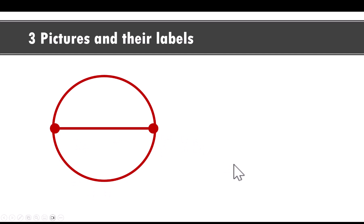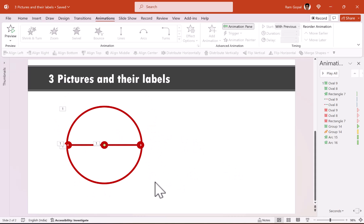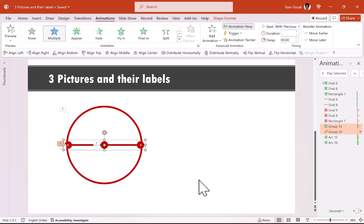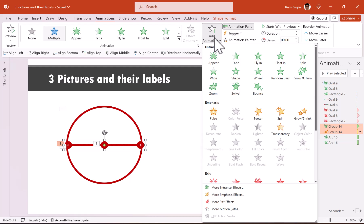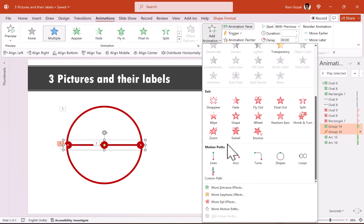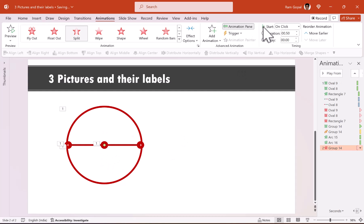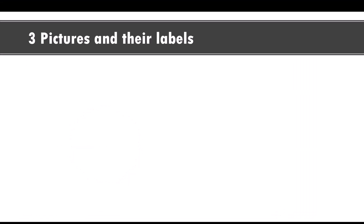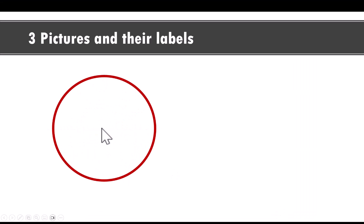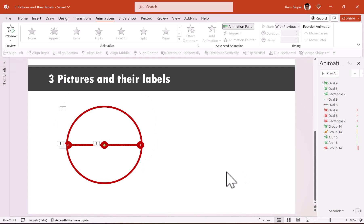It's a beautiful introduction of the circle. The purpose of this animation is to introduce the circle in style. I don't really need the centerpiece anymore, so I'm going to have it exit using the same split animation — add animation, split vertical in — and this happens after previous. When I go to slideshow, you can see the circle is introduced in style and the centerpiece is taken out using split animation.